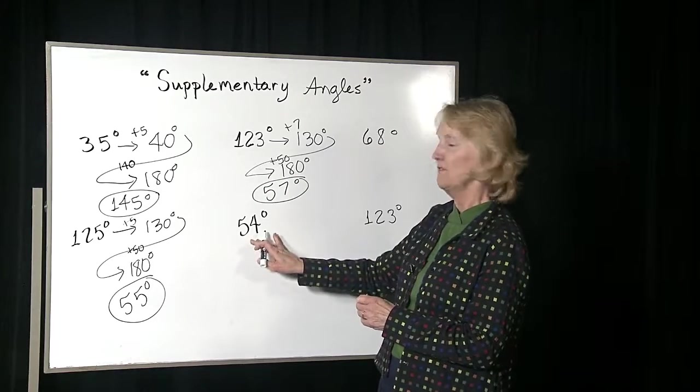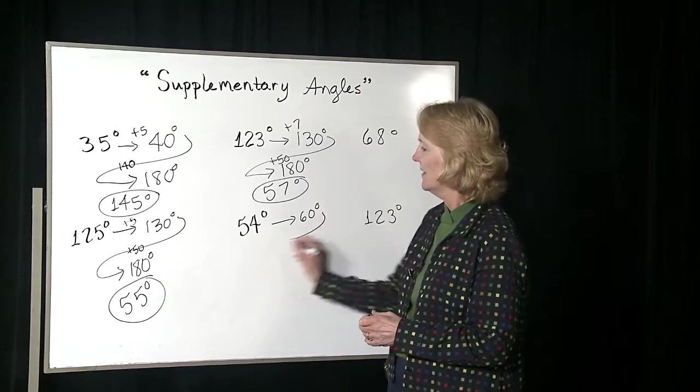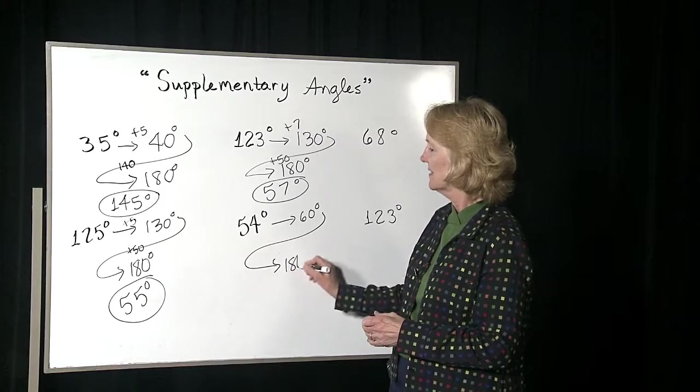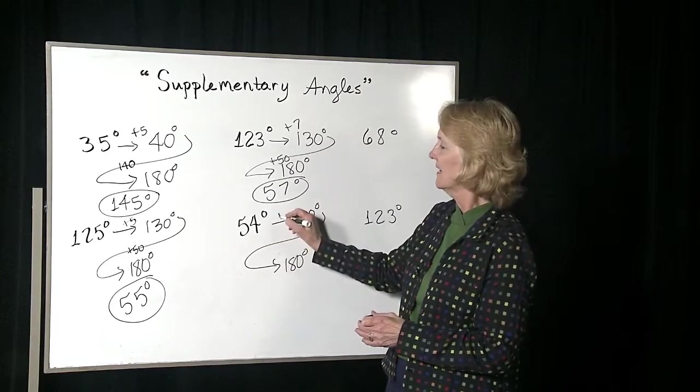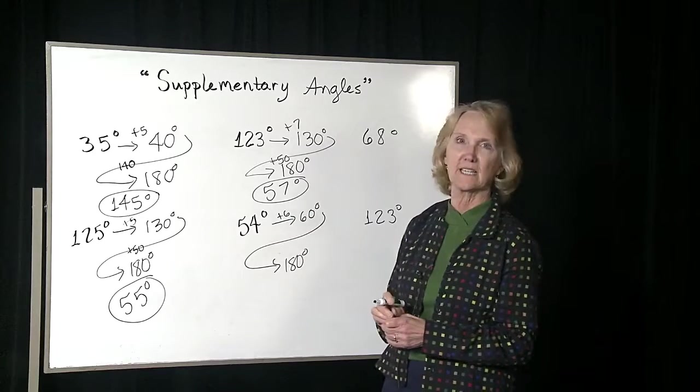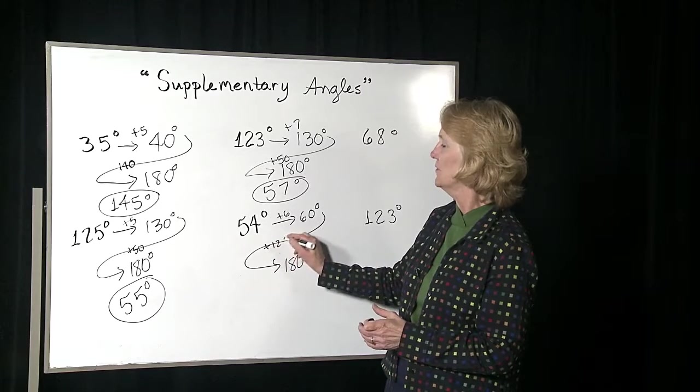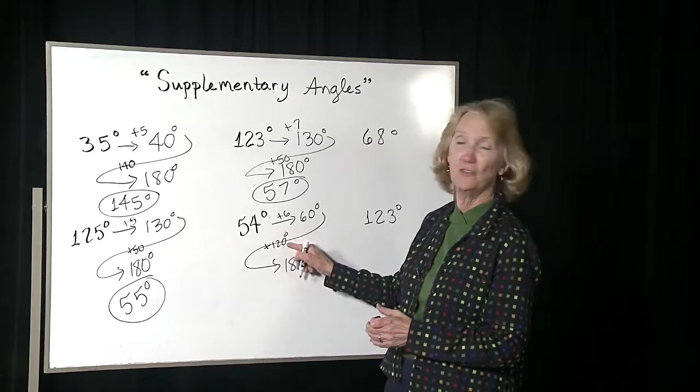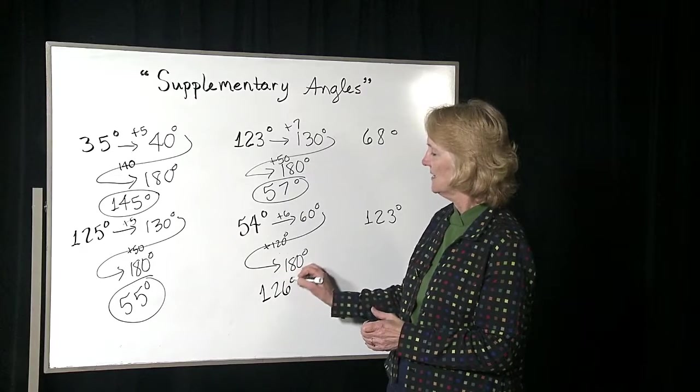This one is 54. You go to the next multiple of 10, and then you go to 180 degrees. 54 plus what makes 60? It'd be plus 6. Once you're at 60, how do you get to 180? You need 120. So you needed 120, and you needed 6, so you need 126.